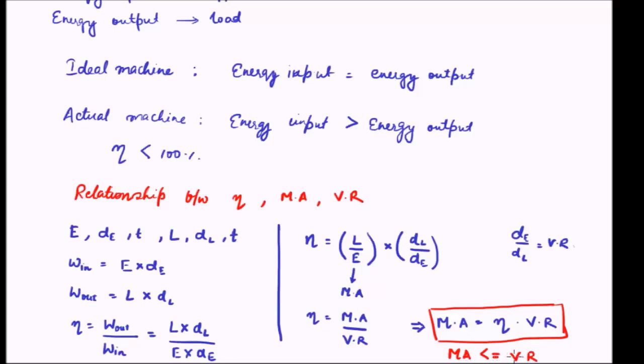A perfectly ideal machine has efficiency equal to 1, so mechanical advantage and velocity ratio are the same. For any actual machine, since efficiency is less than 1, mechanical advantage will be less than velocity ratio. So mechanical advantage is always less than or equal to velocity ratio — equal only in the case of an ideal machine.